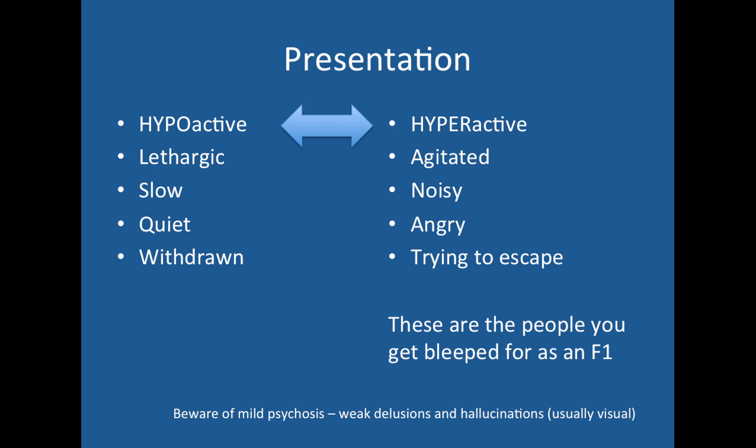Patients present in one of two ways. They're either hypoactive — patients on the geriatrics ward who are asleep in the middle of the day, quiet, don't respond during rounds, very withdrawn. On the other side is hyperactive delirium: agitated, noisy, quite aggressive patients who you get bleeped to because they're causing problems on the ward and nurses may want you to sedate them — which we'll discuss. Sometimes delirious patients can show signs of mild psychosis, with delusions or hallucinations. The hallucinations are usually visual, whereas in psychosis they tend to be auditory.